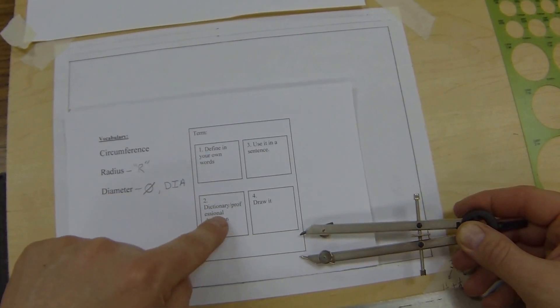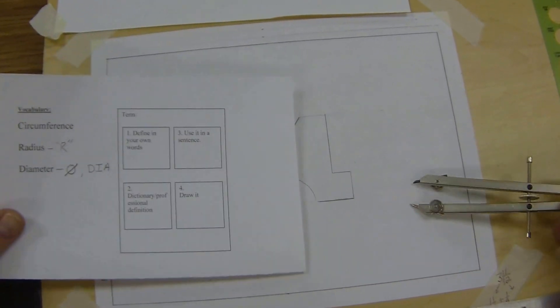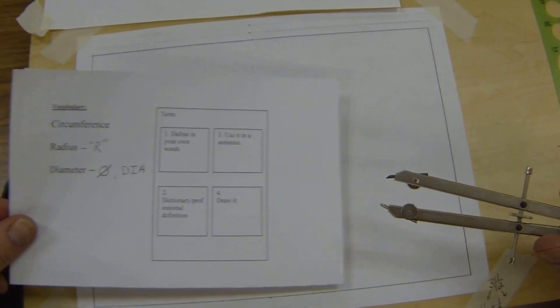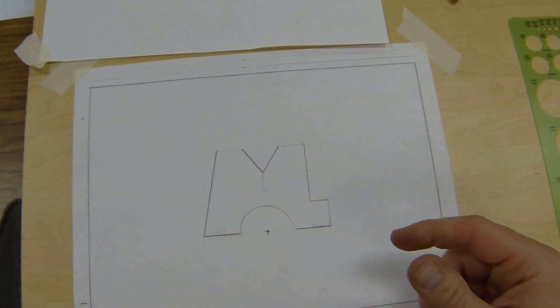You should have that in your own words, dictionary proof, and a picture of it. The picture you should have represented needs to look like the one on the whiteboard. If you need to reference that, please take a look. I'm going to put this tool away for now.